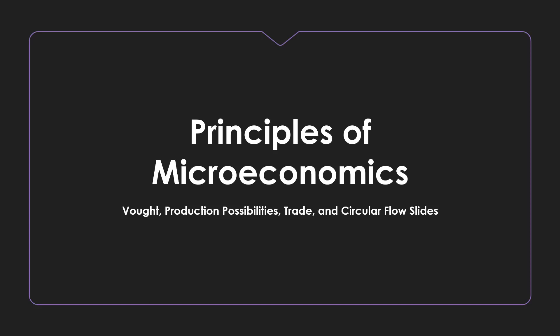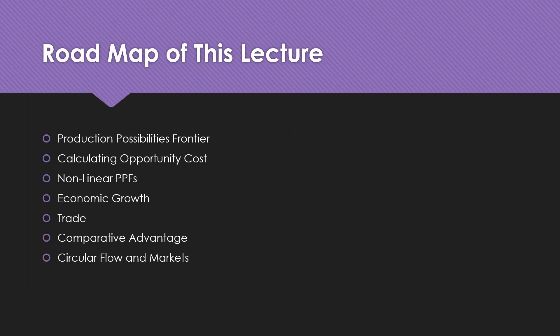Hello, class. Welcome to our next lecture here in our Principles of Microeconomics course. In this lecture, we'll be discussing the production possibilities frontier, trade, and the circular flow model. We're going to be introducing ourselves to two economic models in this lecture. We'll start with the production possibilities frontier, through which we'll calculate opportunity costs, discuss non-linear PPFs, economic growth, trade, comparative advantage, and then finish with the circular flow model and markets.